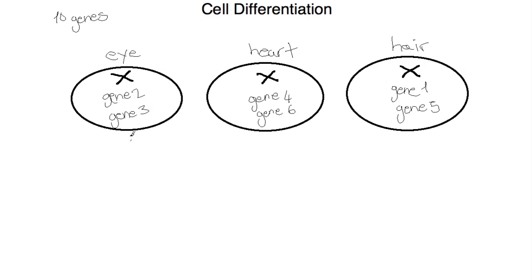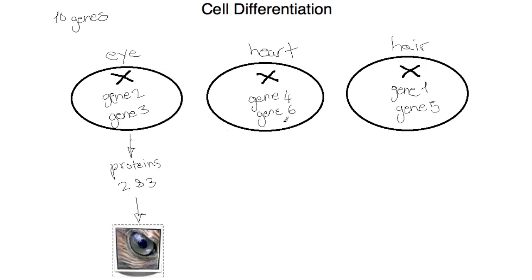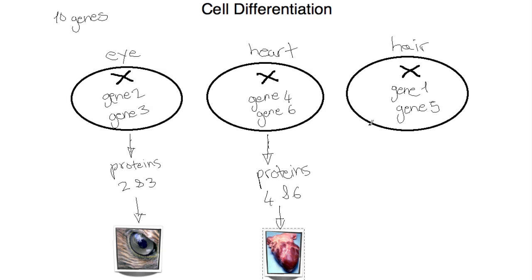Our first cell will encode for proteins 2 and 3, which will affect the structure and function of the cell, and so this cell will become an eye cell. In our heart cell, gene 4 and gene 6 are activated, leading to proteins 4 and 6, which affect the structure and function of the cell, making it a heart cell. And in our last cell, gene 1 and gene 5 code for proteins 1 and 5, which affect the structure and function of the cell, so this cell becomes a hair cell.